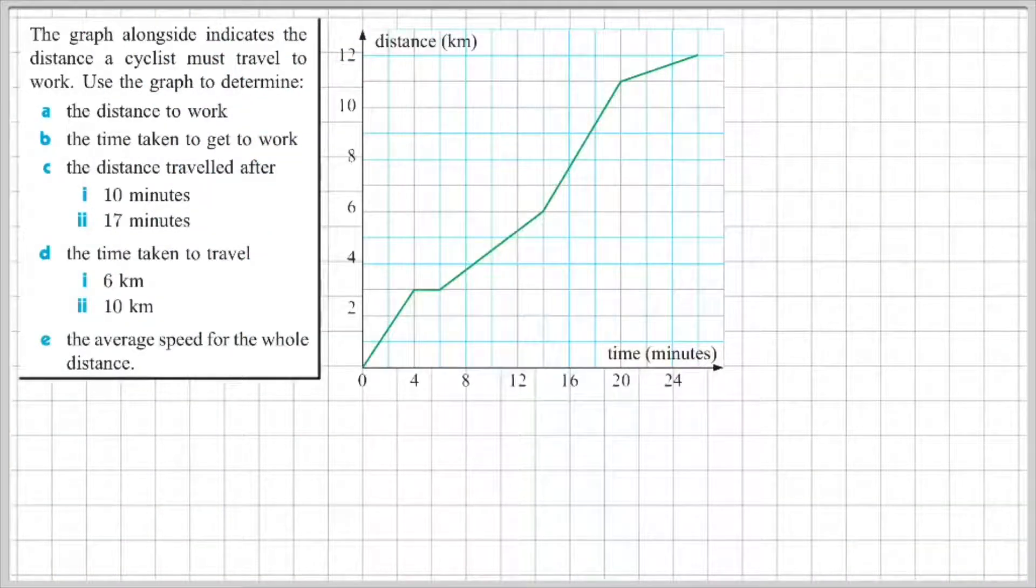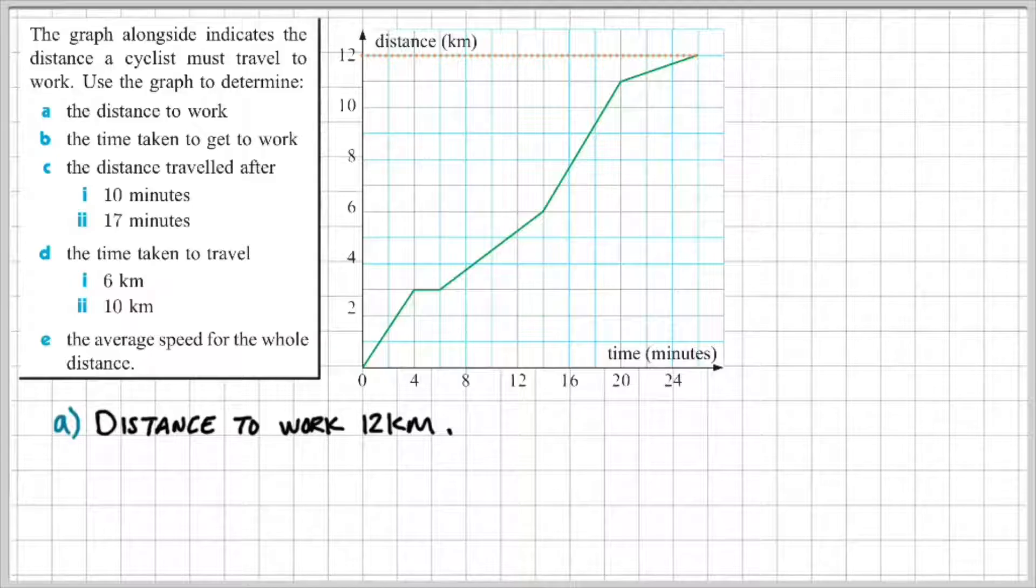So part A, it says work out the distance to work. The y-axis represents the distance the cyclist must travel to work in kilometres, which means that at zero, he's at home. And here we can see that the maximum distance he must travel to work is 12 kilometres. So for part A, we can say that the distance to work is 12 kilometres.